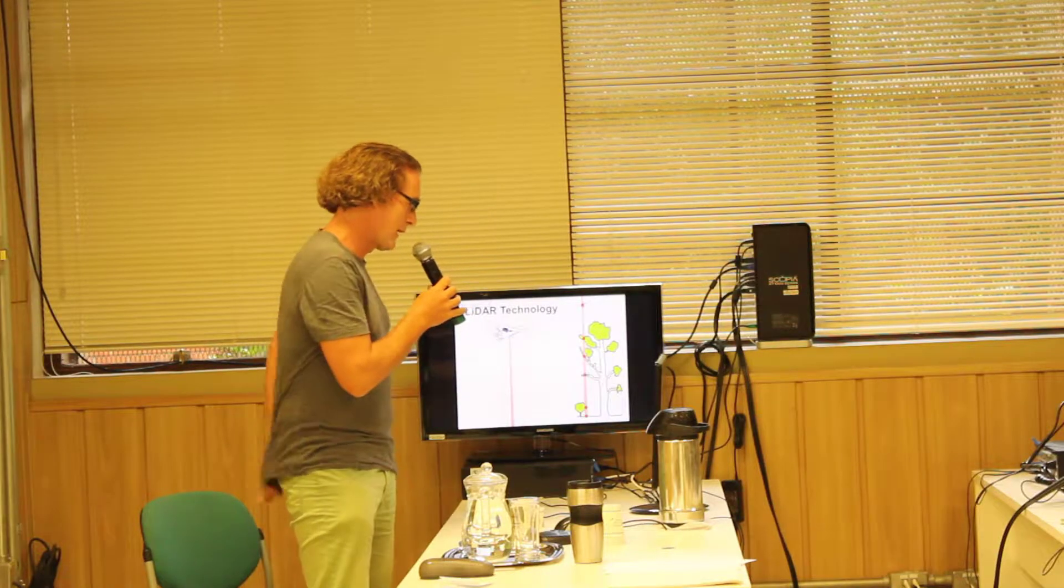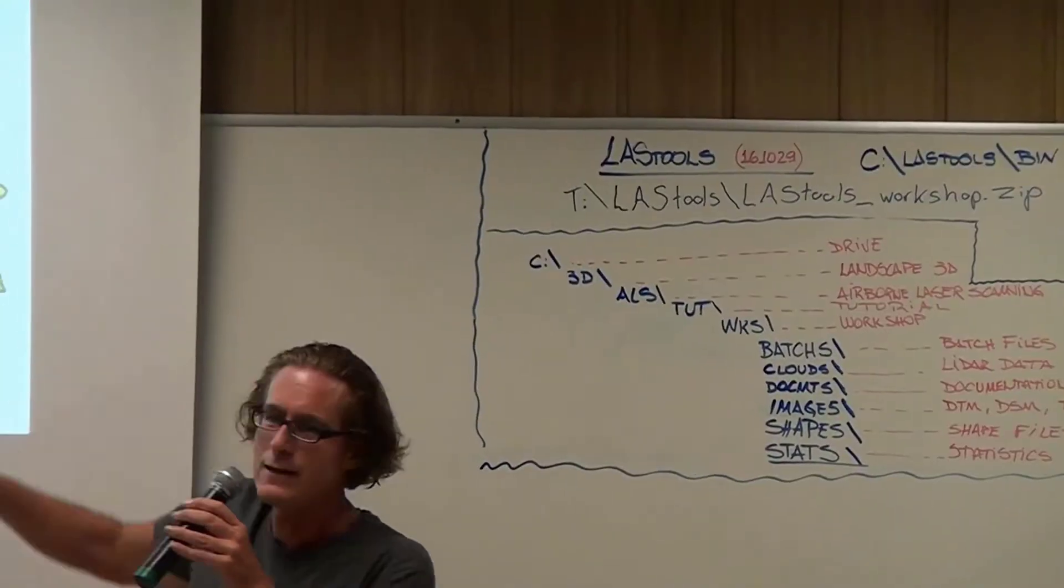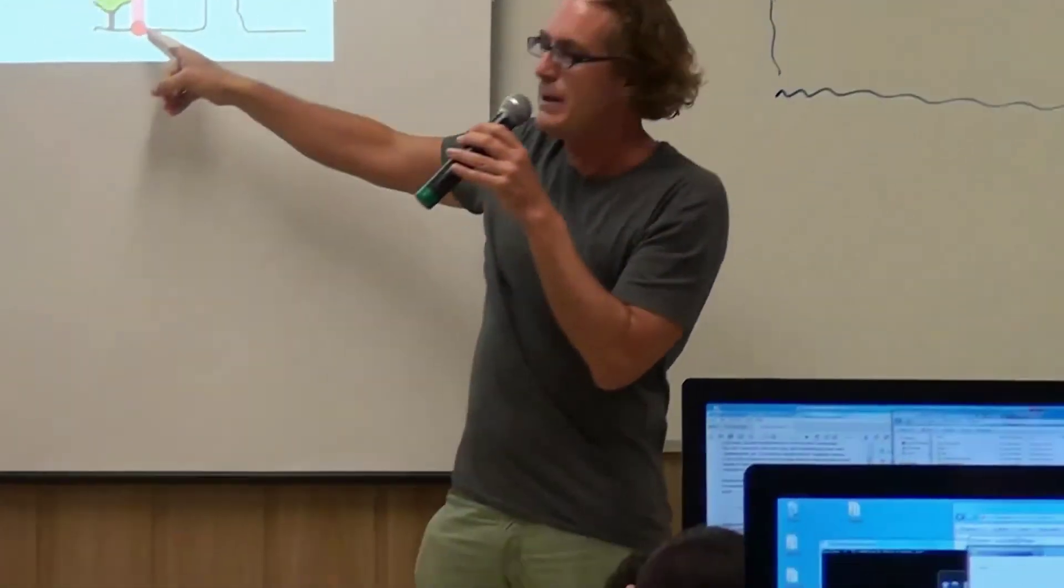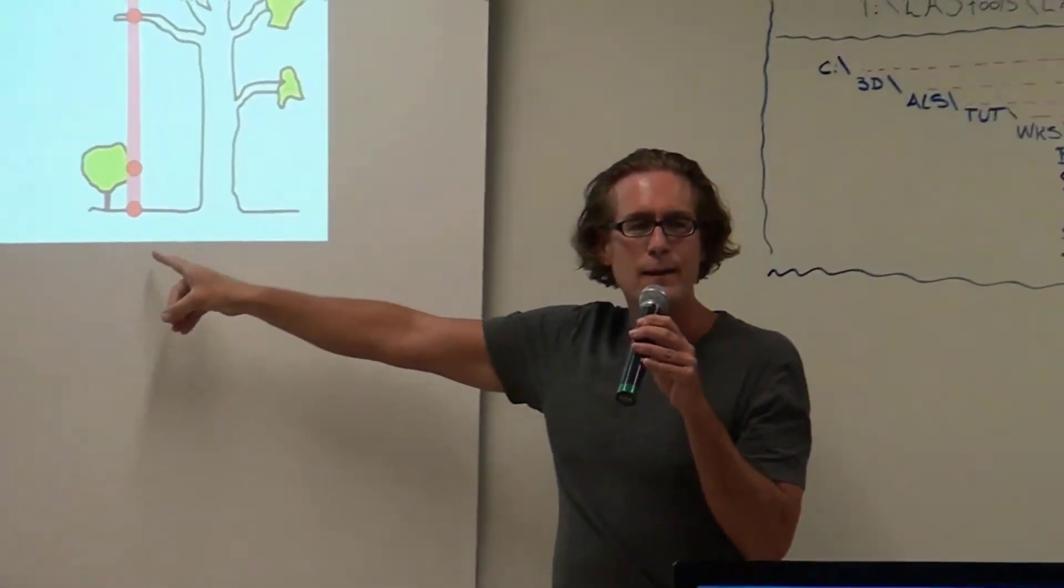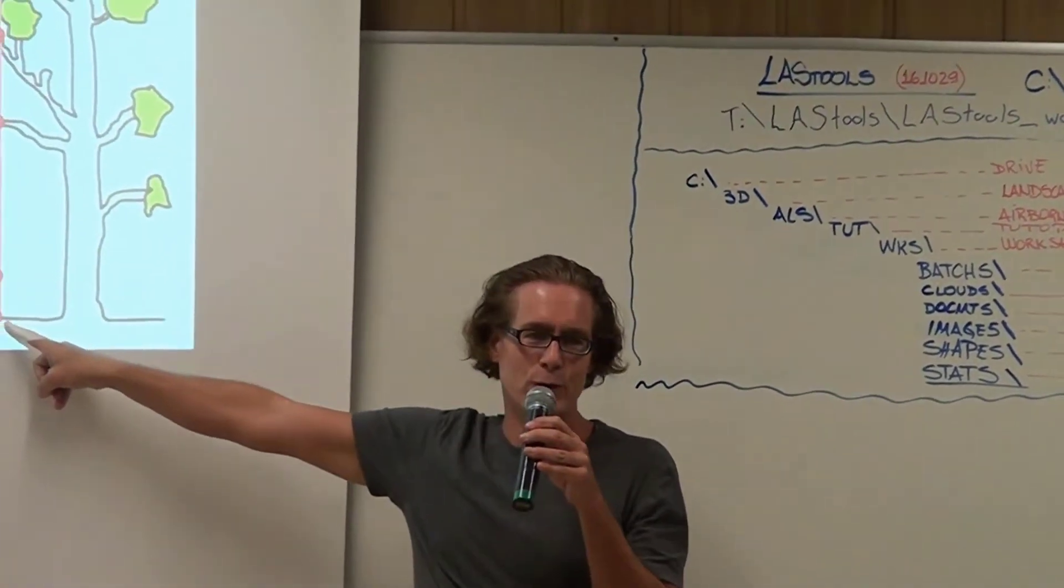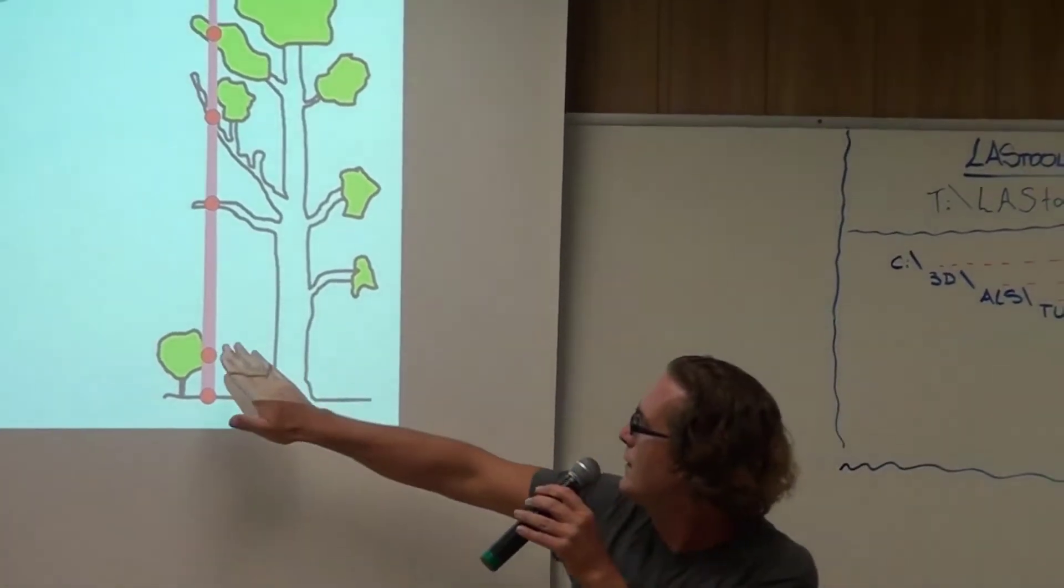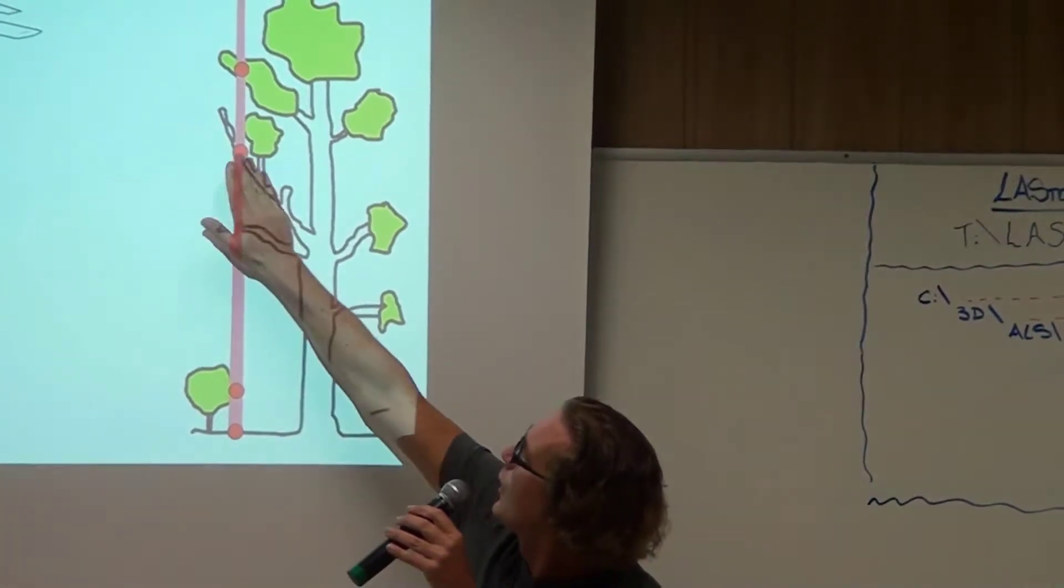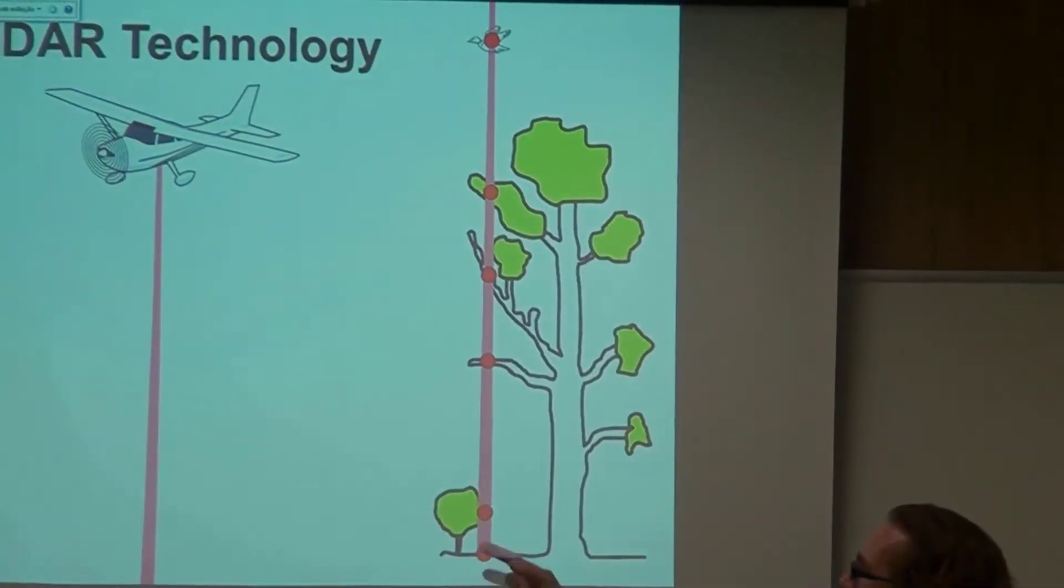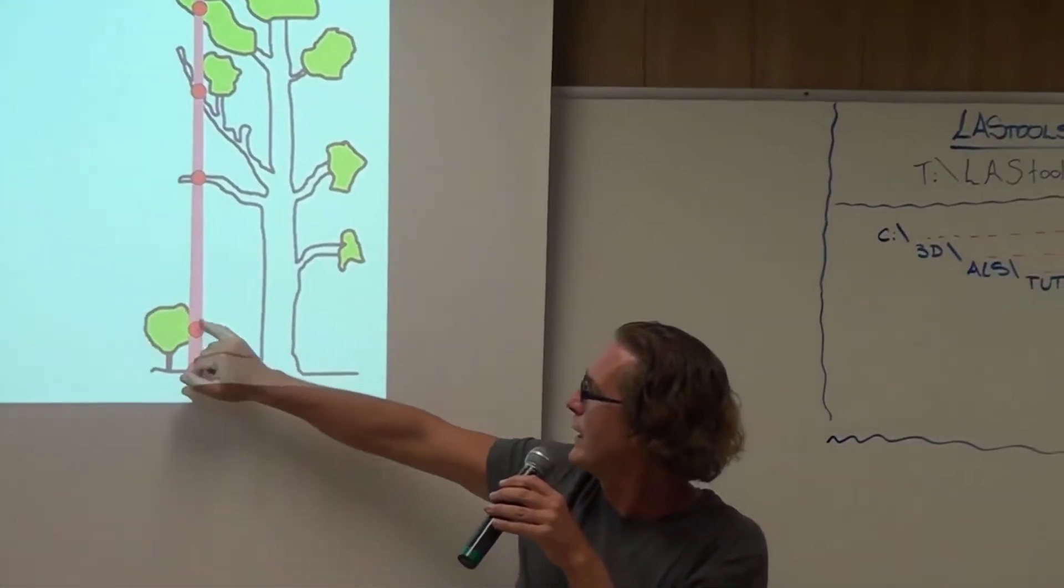But there are not that many dragons flying right now. So often, the laser continues on and will hit several other things. And as long as there is enough energy left, it will continue to penetrate and maybe it even hits the ground. What you see here is the best possible scenario where we have a number of tree returns and we get the ground return. That's unfortunately not that often the case. Often, even without dragons, it will stop maybe here already because very dense leaves and no more light can continue. Or after one, two, three hits, there's not enough energy left so we don't get the ground return.